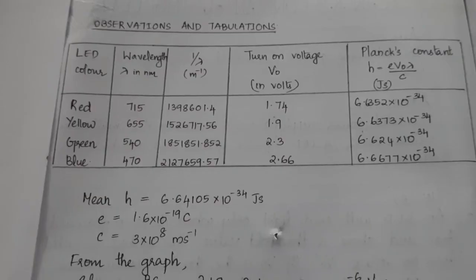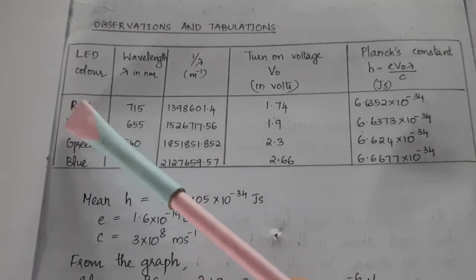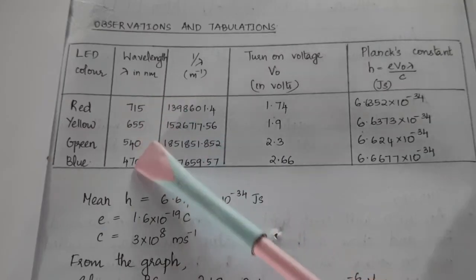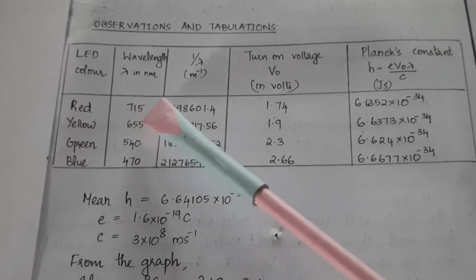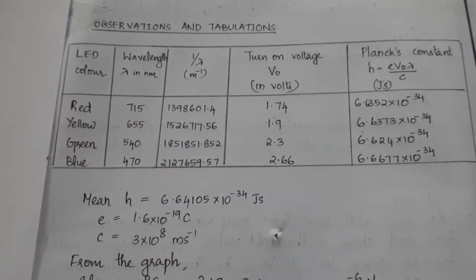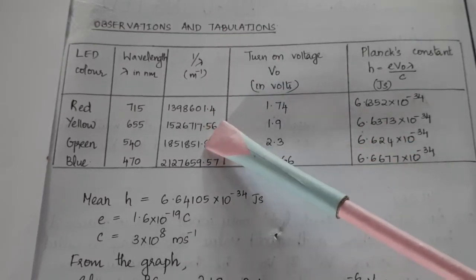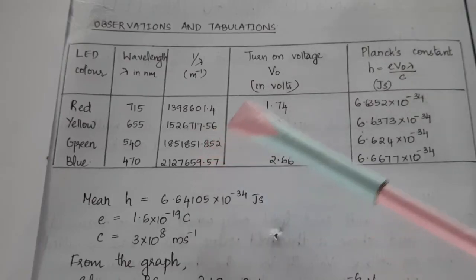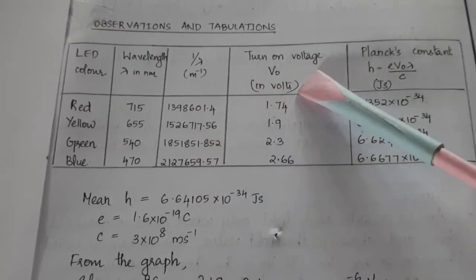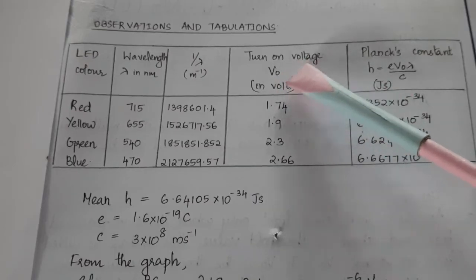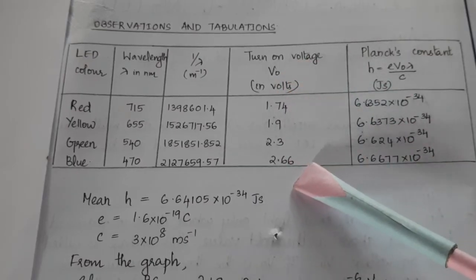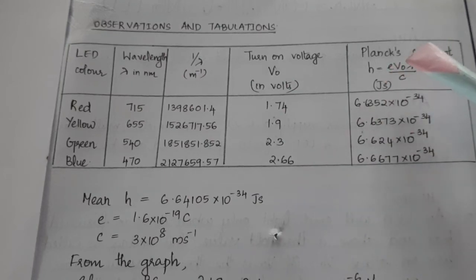Coming to the tabular column, for various colors of light or various LEDs, we should have an idea about the wavelength it is emitting or at least the rough range of wavelength it is emitting. And we can find out 1 by lambda. This is just for the sake of plotting a graph later on. In the experiment, we will be in fact measuring this turn-on voltage V or V naught for the various colors. And Planck's constant H will be calculated by the equation E V lambda by C. That is, joule second will be the unit of Planck's constant.